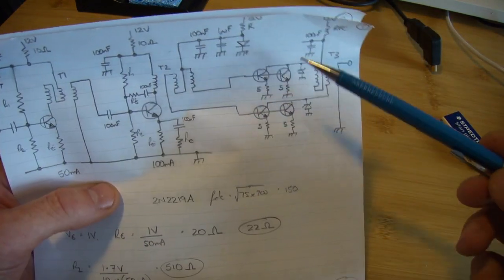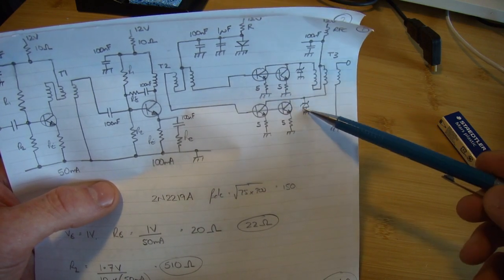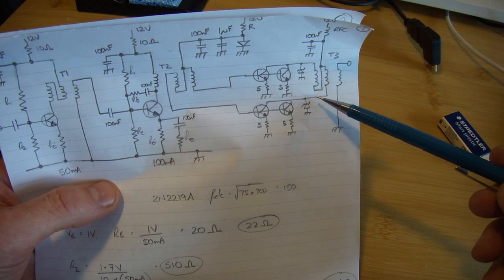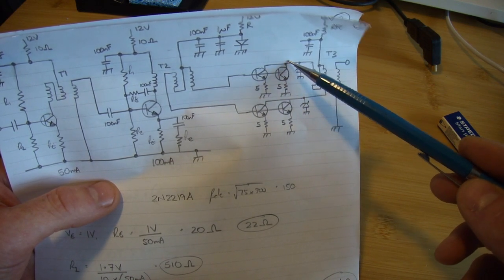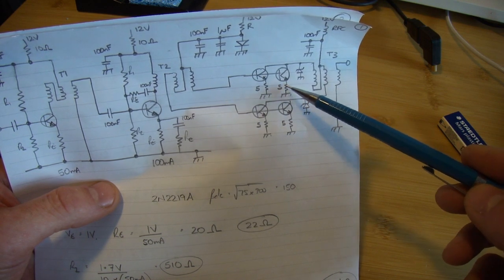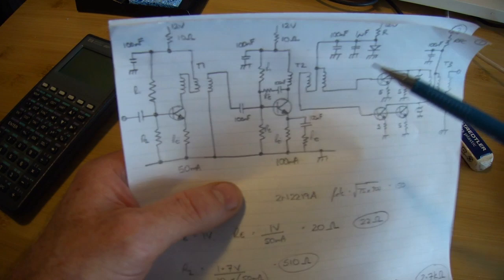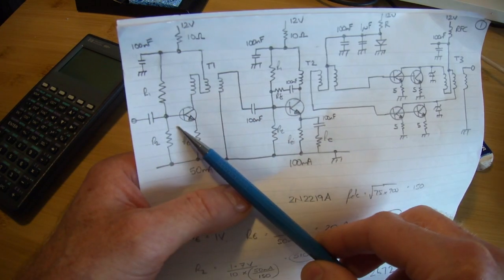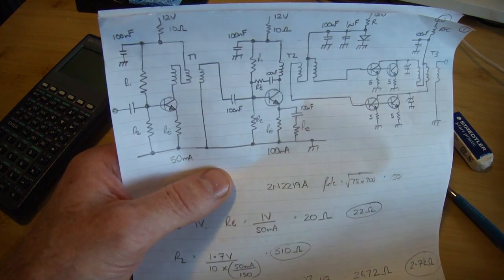I am going to put a couple of Zeners across that output there, so I don't exceed the reverse breakdown voltage across the collector and emitter for that 2219A. So I'm going to put a couple of Zeners there. Anyway, so getting back to the first stage, gain of approximately 19 dB.